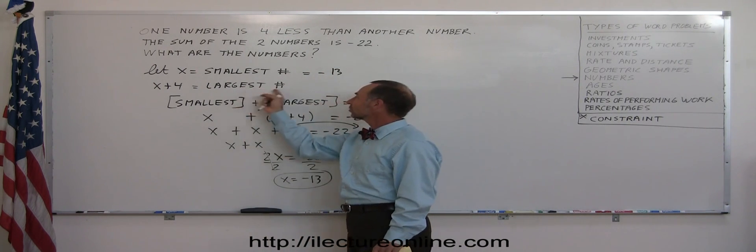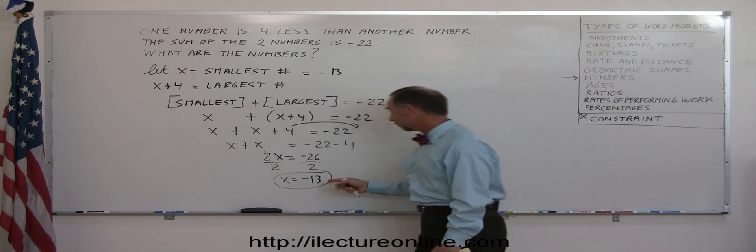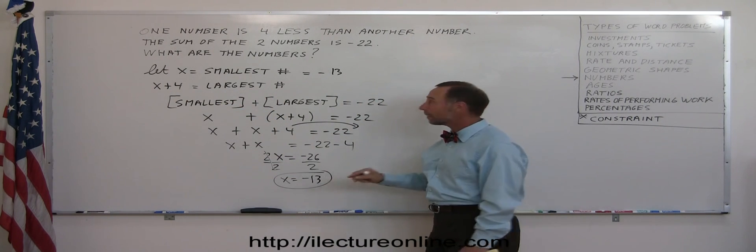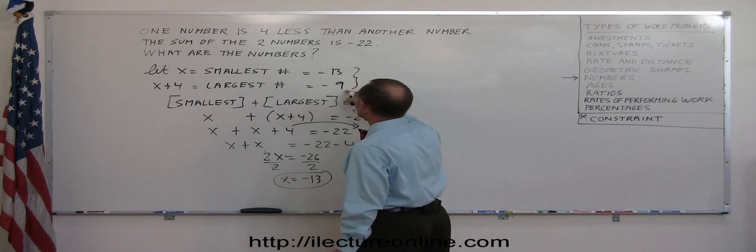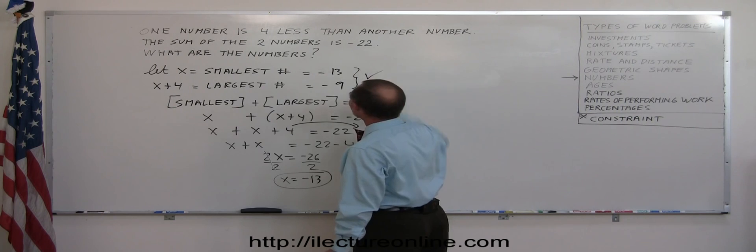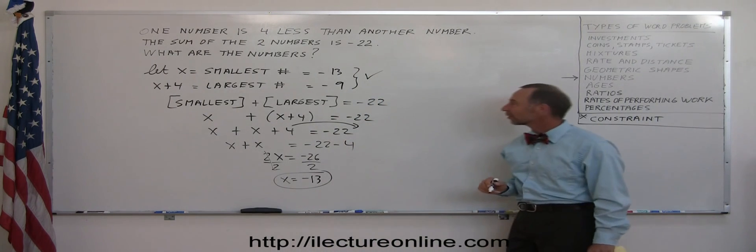And since the largest number is four more, when we add four to minus 13, we get minus nine. So the largest equals minus nine. And if we combine the two, minus 13 minus nine, indeed, they give you minus 22. So we've got the right answers.